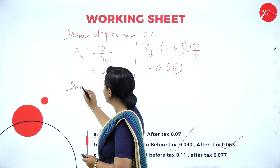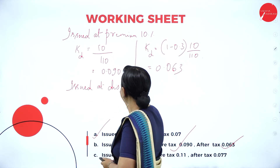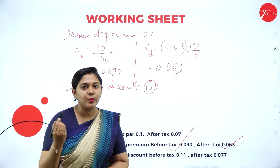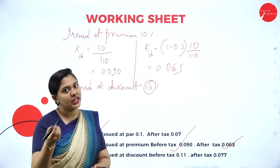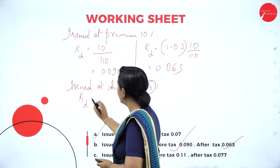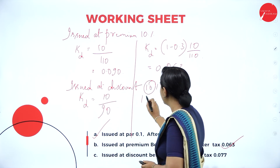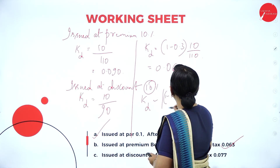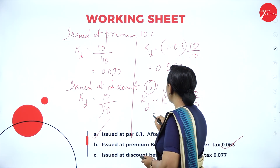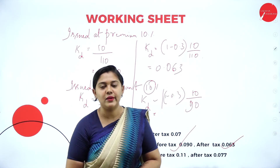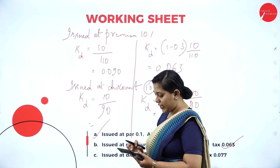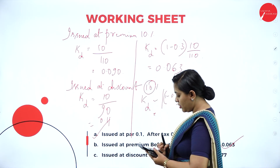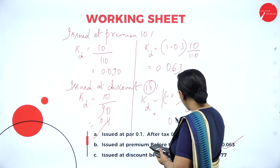Next, issued at a discount of 10%. 100 into 10% is Rs. 10; subtracting from 100 gives Rs. 90 as the net proceeds. Cost of debt before tax: 10 divided by 90 equals 0.11. For after tax: (1 minus 0.3) into 10 divided by 90, that is 0.7 into 0.11, which gives 0.077. Those are the answers for issued at a 10% discount.